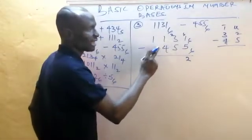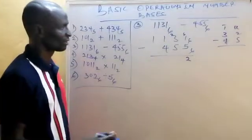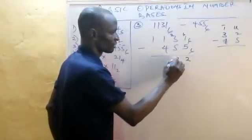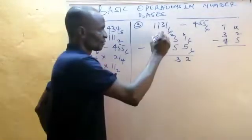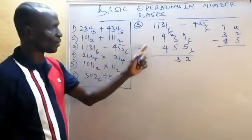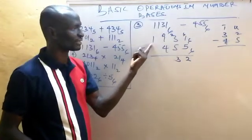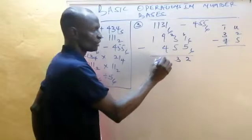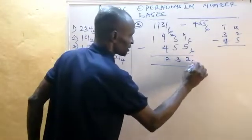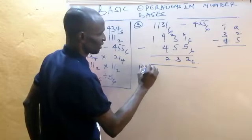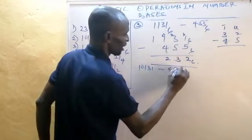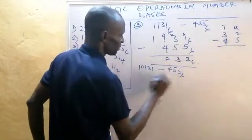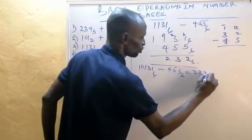I still need to borrow one more. That one again carries a value of six. Six plus zero is six, six minus four is two. So 1131 base six minus 455 base six is the same thing as 232 base six.